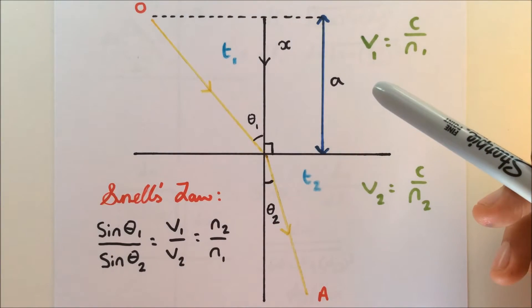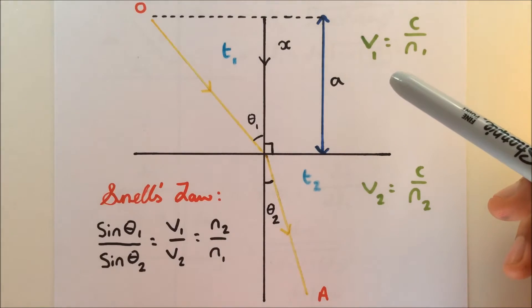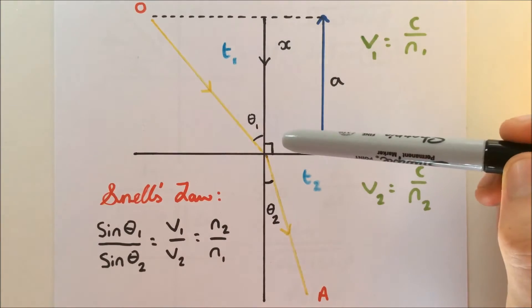Hello. Today we're going to prove Snell's Law using Fermat's Theorem. Fermat's Theorem simply states that light takes the shortest path.